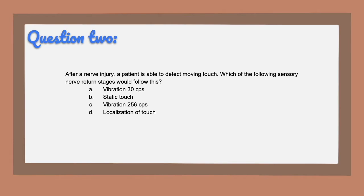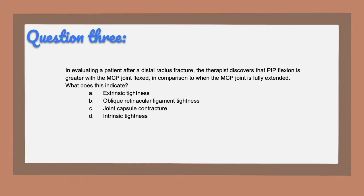For question two, the correct answer is B, static touch. When recovering from nerve injury, sensations come back in different stages, and after moving touch, the next thing that comes back is static touch. For question three, the answer is D, intrinsic tightness. PIP flexion is greater with the MCP joint flexed versus fully extended — that indicates intrinsic tightness. If the opposite is true — PIP motion greater with MCP in full extension — that would be extrinsic tightness. When joint capsule contracture is present, PIP motion will be the same regardless of position.